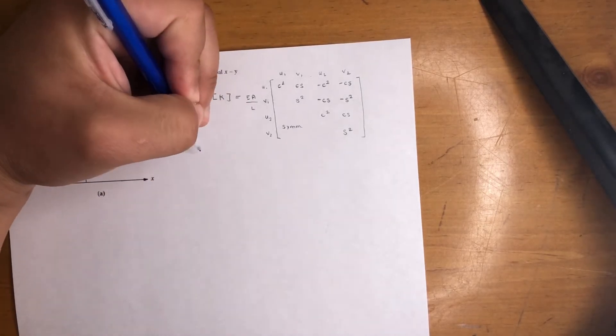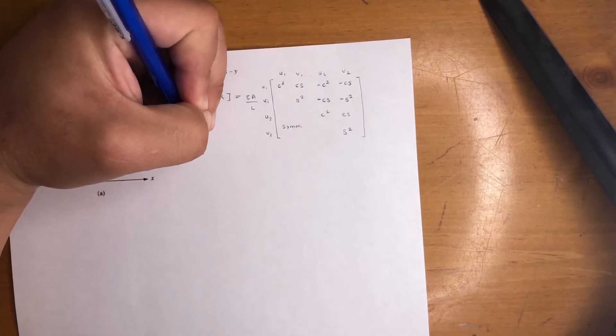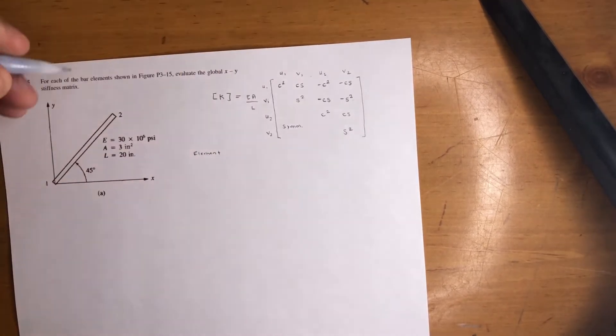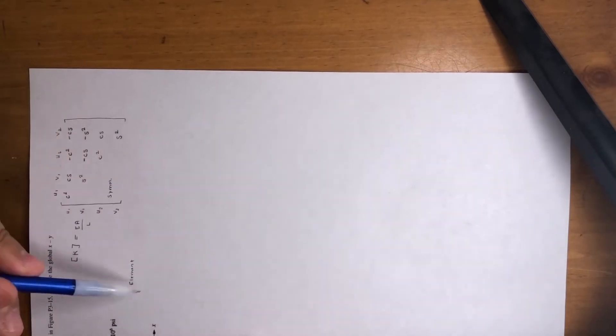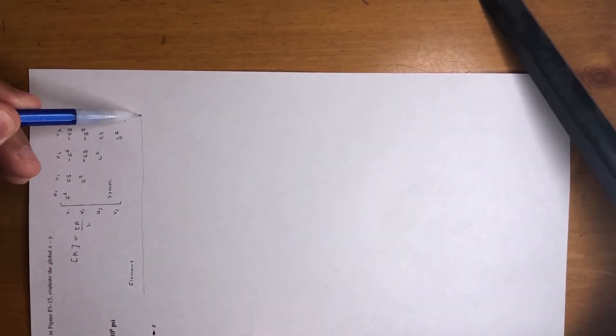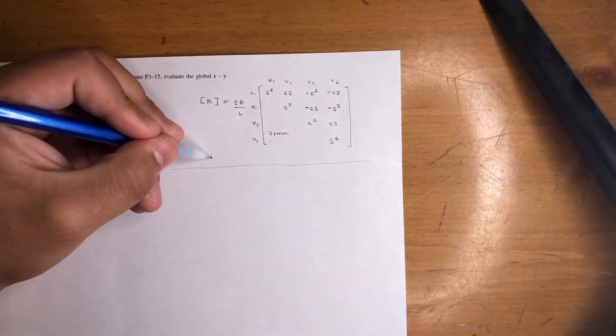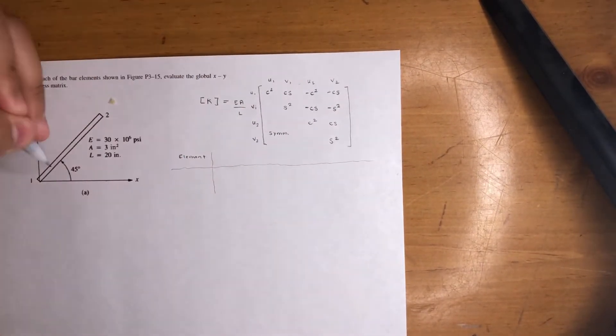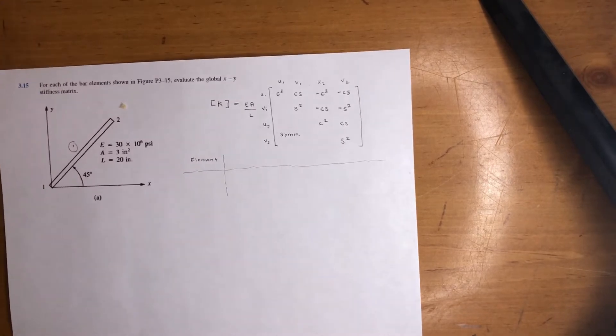So this is what I like to do: I'll write element, because these things get complicated, but in this case we just have one. Let me show you what I do, because you're going to need all these values. So we have element one—this is your element, bar one. We're going to put one right here.